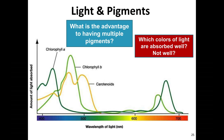Plants don't necessarily use all of the visible light spectrum, and there is variation between different plants. Some have a higher concentration of chlorophyll B, some a higher concentration of carotenoids, some more chlorophyll A — it depends on the environment they're living in, the intensity of light, the amount of shade, and so forth.